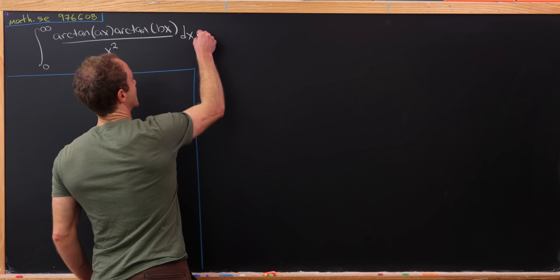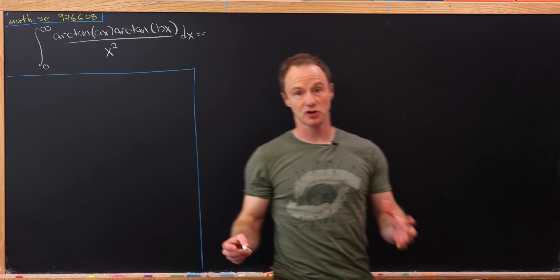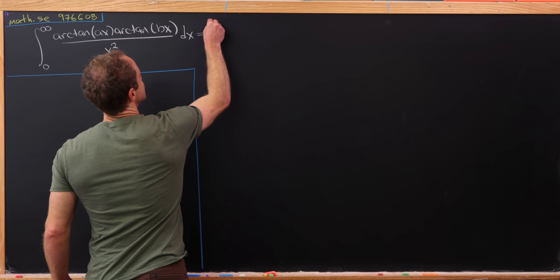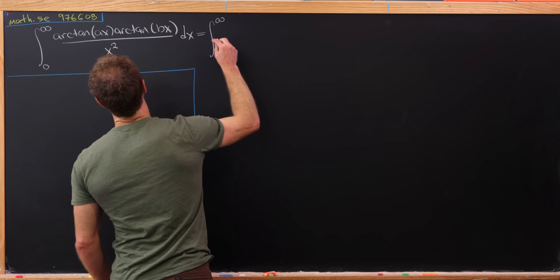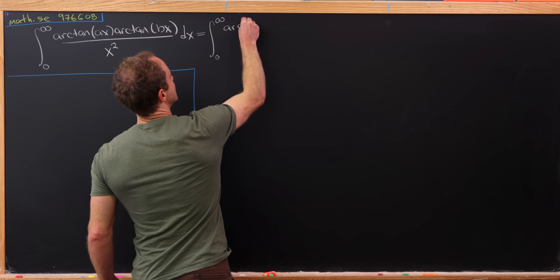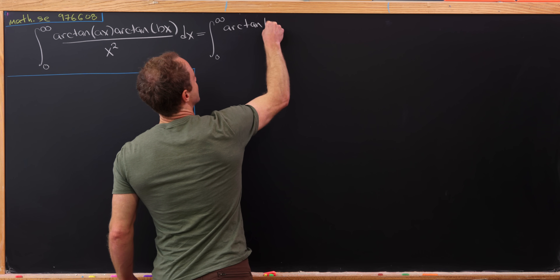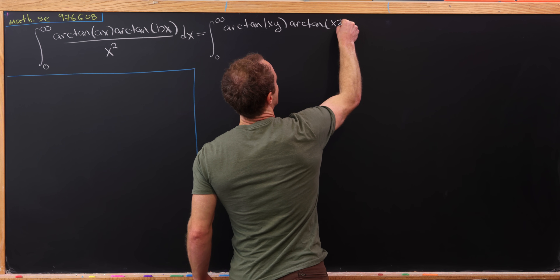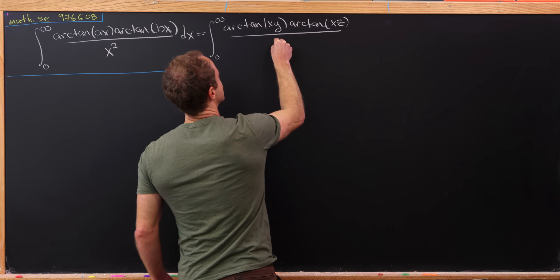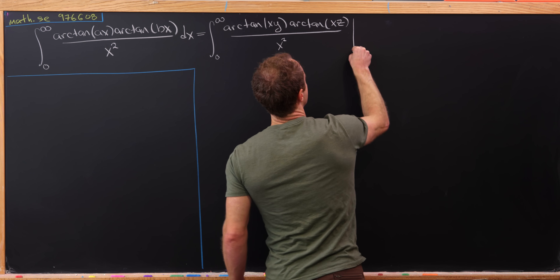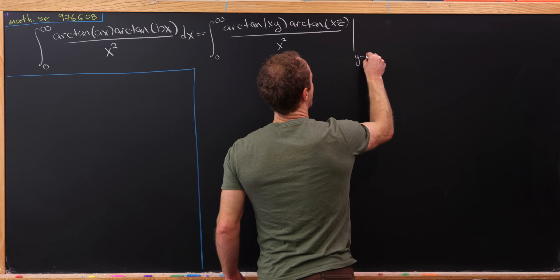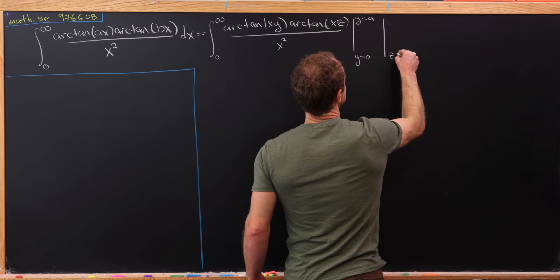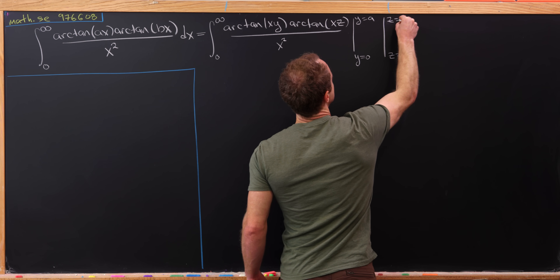I'm going to start by writing this like it looks like maybe a triple integral that has been evaluated. In particular, I'm going to write this as the integral from 0 to infinity of the arctan of xy times the arctan of xz all over x squared, where I've evaluated this from y equals 0 to y equals a, and then z equals 0 up to z equals b.